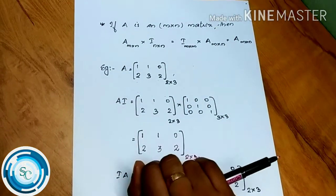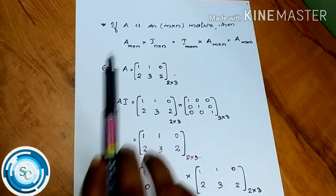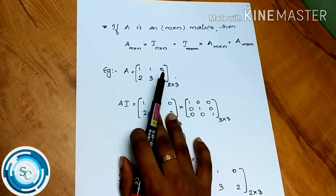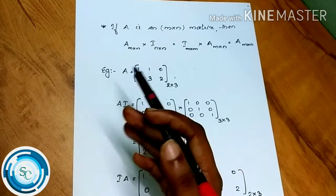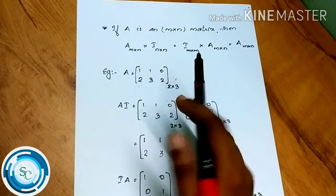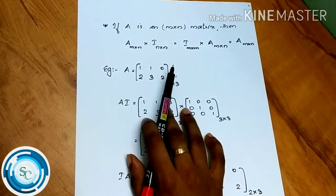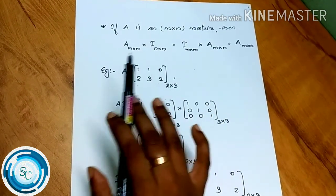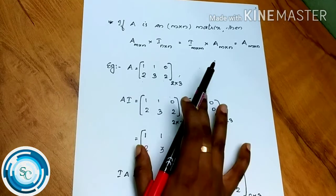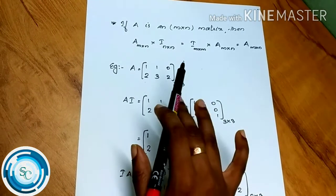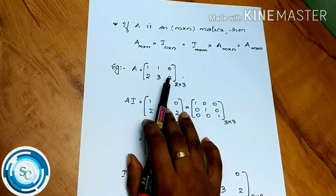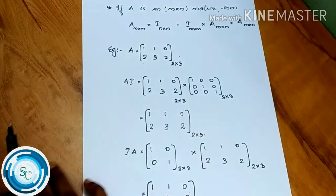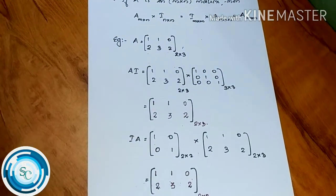The result is the 2×3 matrix. You can check it out yourself. For a non-square matrix, the identity matrices on the left and right side have different dimensions matching the rows and columns respectively. Thank you.